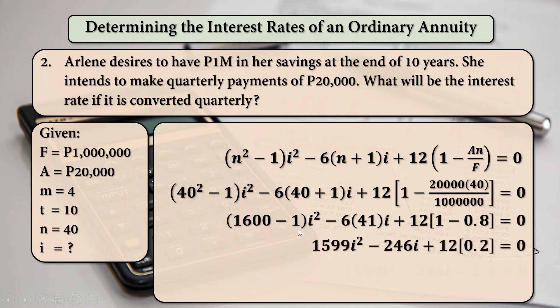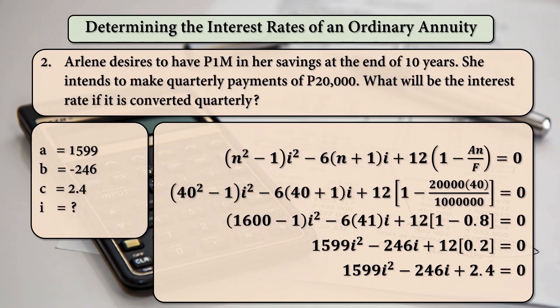1,600 minus 1 is 1,599. Minus 6 times 41 is 246. Plus 12 times 0.2. Because 1 minus 0.8 is equal to 0.2. And then 12 times 0.2 is equal to 2.4. And from here, we are ready to determine the values of A, B, C. For our quadratic formula, A is 1,599. B is negative 246. C is 2.4.